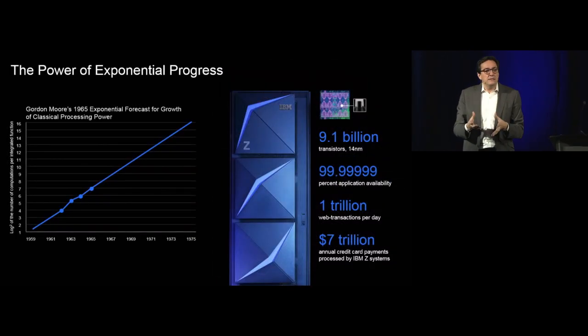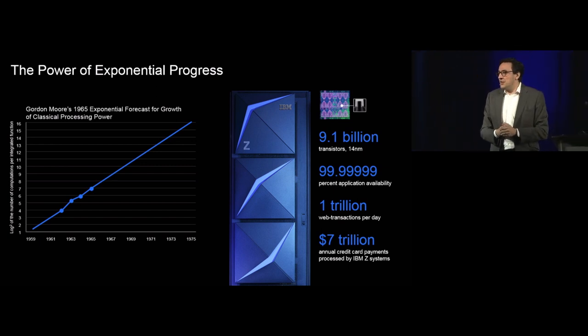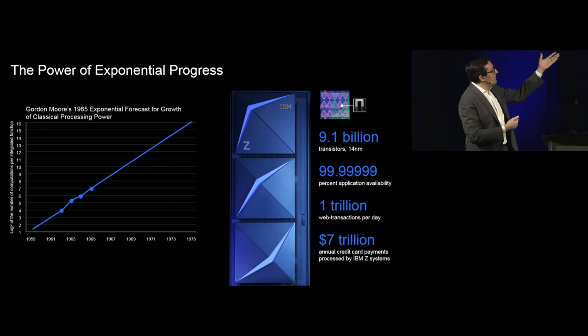The companion idea that was empirical in nature, of course, was what we all know in this community as Gordon Moore and derivatives like Denard scaling. It's been an extraordinary success. Just to reflect on how sophisticated the systems we can build today, a latest generation Z15 system that we launched late last year, a single microprocessor contains 9.1 billion transistors built with 14 nanometer technology.